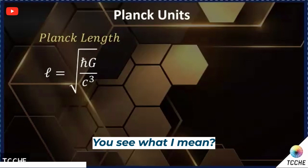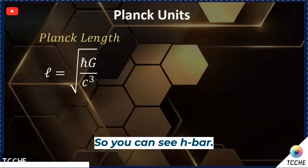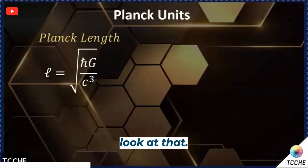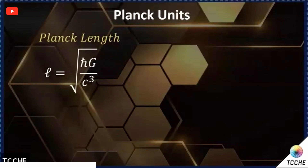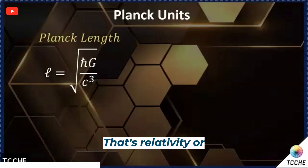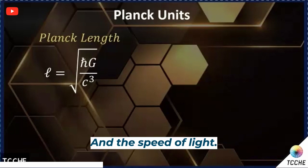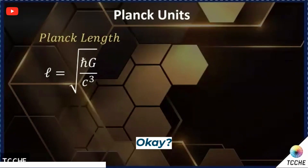Here is the Planck length. You can see h-bar. Gravity and h-bar hanging out together — that's quantum physics, that's relativity or Newtonian physics, and the speed of light. So you get a length called the Planck length. It's a very, very short length.